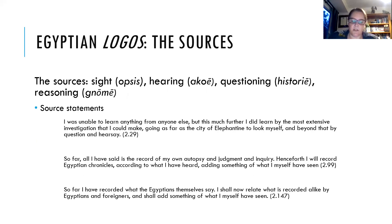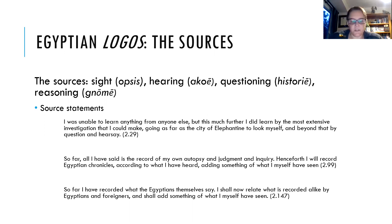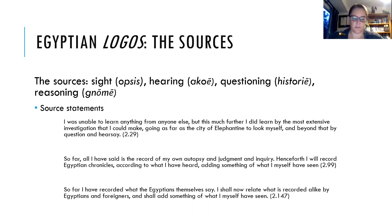Before I move on to methodology, I'll quickly cover the source citations in the Egyptian Logos. There are certain complexities that come with the wealth of information we are given about the sources of Herodotus's information. There are three broad source statements given in the Logos at chapters 29, 99, and 147. These statements give us Herodotus's sources and which parts of book two they cover — sight, heard information, inquiry, and reasoning. Sight figures more in the earlier geographic part of the book, whereas heard information becomes more prominent in the historical section.